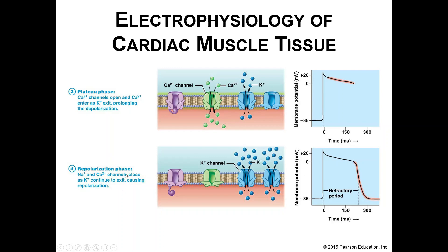The last step: the sodium channels remain closed, and the potassium channels have finally all opened. We then see repolarization; eventually the potassium channels also close once we hit resting membrane potential, and we can start the whole process over again with depolarization by opening those sodium channels.